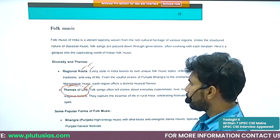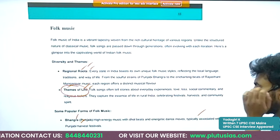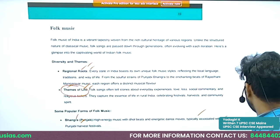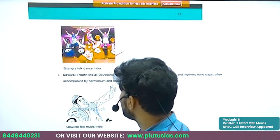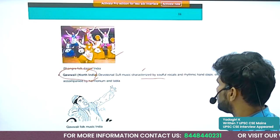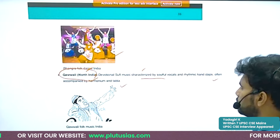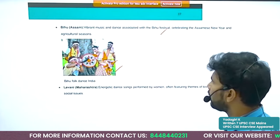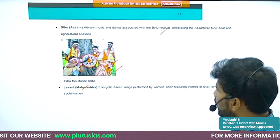Bhangra is associated with Punjab during the harvesting season — it involves both dance and music. Qawwali is performed in the entire north India and is a devotional Sufi music characterized by soulful vocals, rhythmic hand claps, often accompanied by harmonium and tabla. Bihu music is a vibrant music and dance associated with the Bihu festival of Assam.